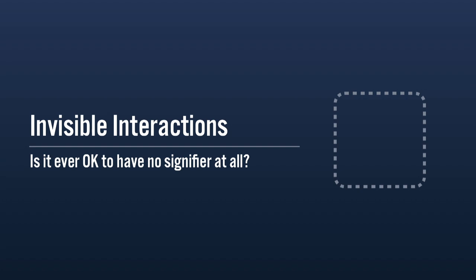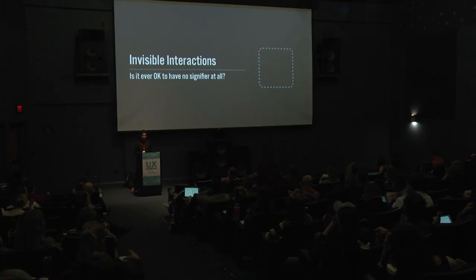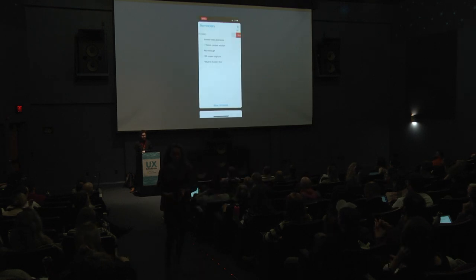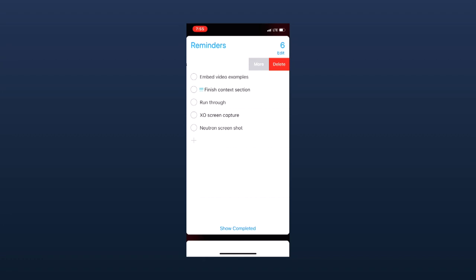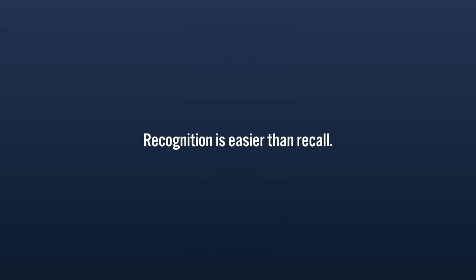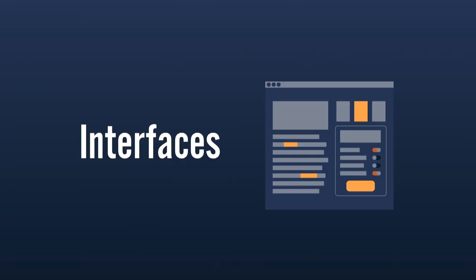What about invisible interactions? Interfaces like iPhones have a lot of gesture-based interactions. The short answer is yes, invisible interactions can be okay — that could be an entire talk on its own — but the key is that once discovered, the interaction should be easy to remember and used consistently throughout a platform. The important thing to remember: recognition is easier than recall. We're better at recognizing things we've previously experienced than remembering them blindly. Never make something an invisible gesture just because it seems novel — do it with purpose.